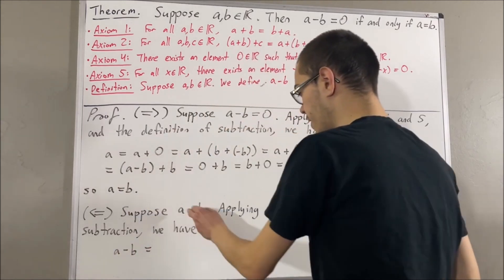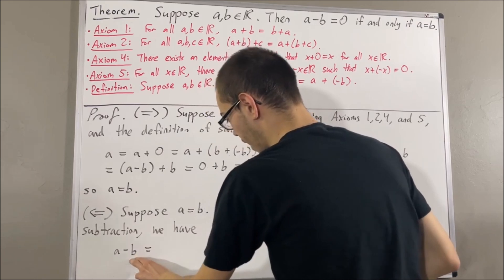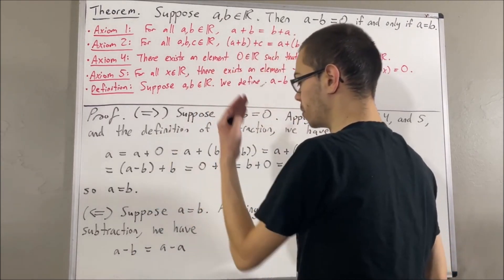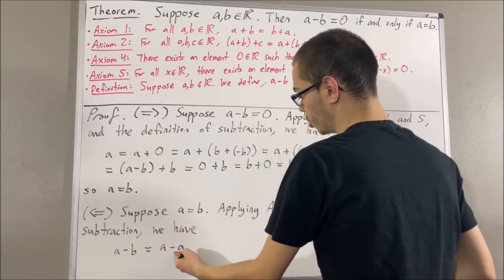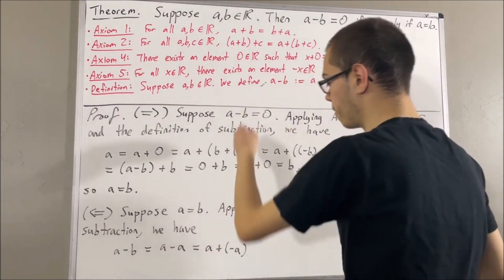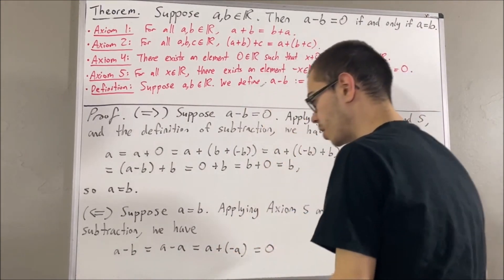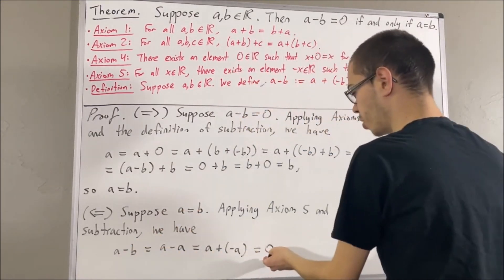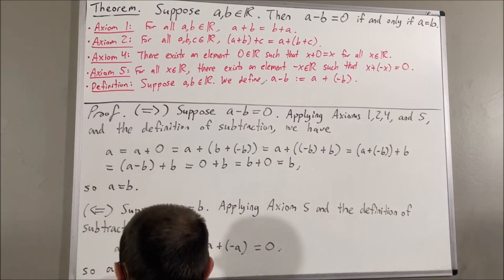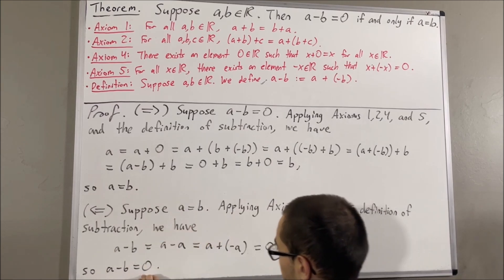First of all, since a is equal to b, we can replace b with a. And then by definition of subtraction, a minus a is equal to a plus the negative of a. But then by axiom 5, a plus the negative of a is equal to zero. So through this chain of equalities, we have established that a minus b is equal to zero. And so we have shown: if a is equal to b, then a minus b is equal to zero.